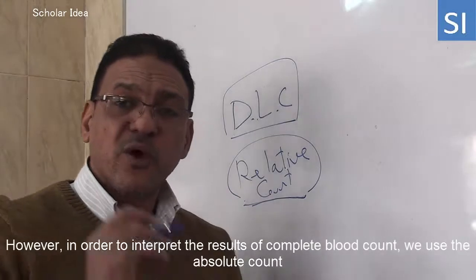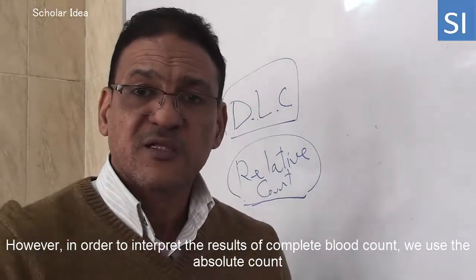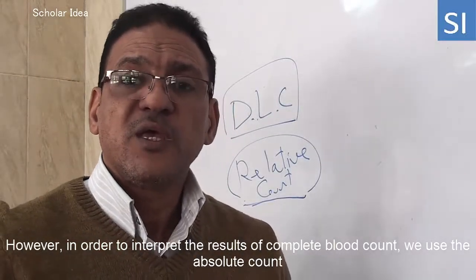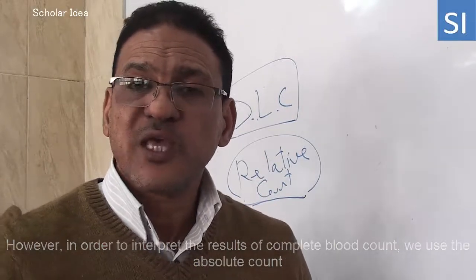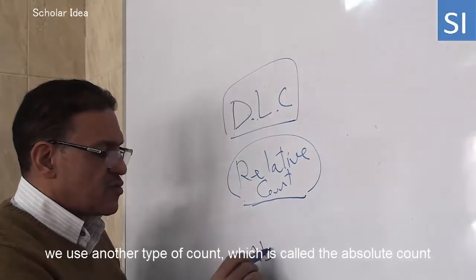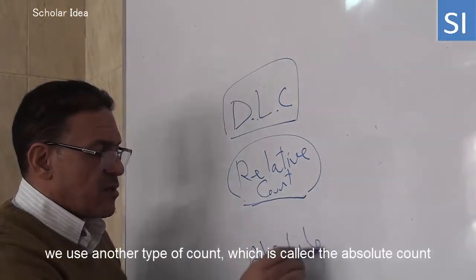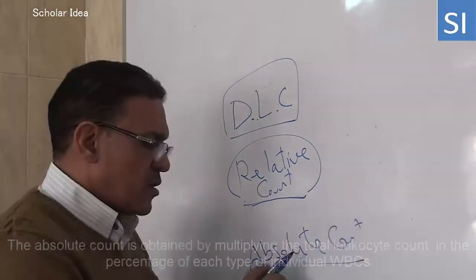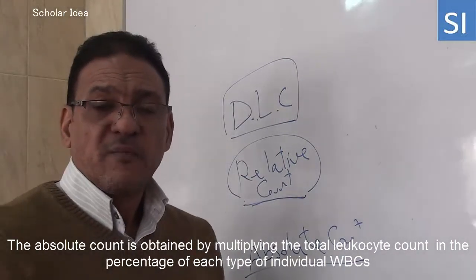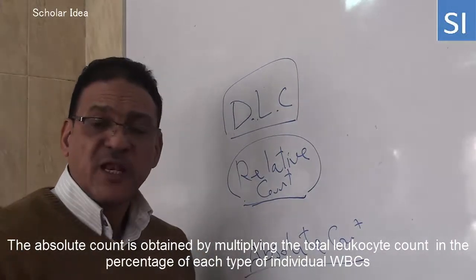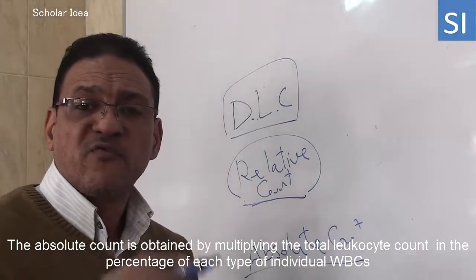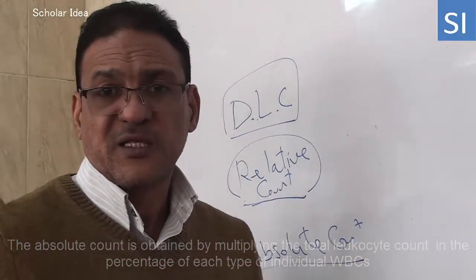However, in order to interpret the results of complete blood count, we use the absolute count. The absolute count is obtained by multiplying the total leukocyte count by the percentage of each individual type of cell.